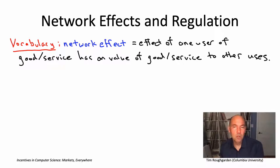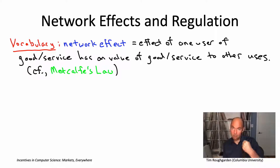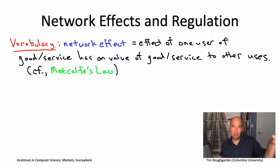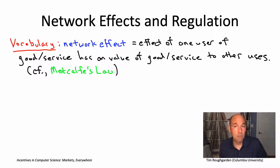A related idea you might hear about is something called Metcalfe's Law. That points out that in a market, from the perspective of any fixed participant, the number of your possible trading partners is growing linearly with the number of other users. But the number of overall possible pairings — the number of possible trades — is growing faster than linearly; it's growing quadratically with the number of participants.